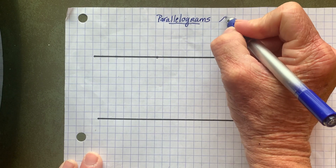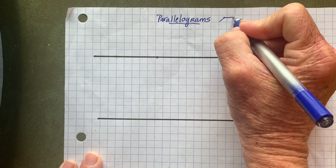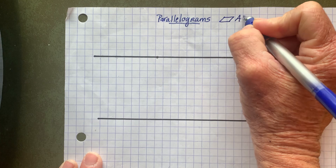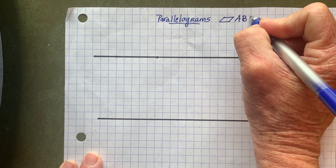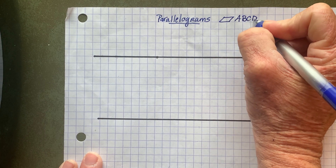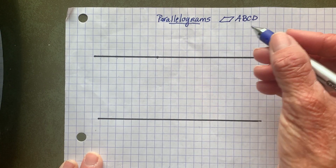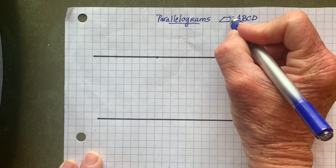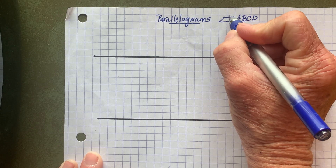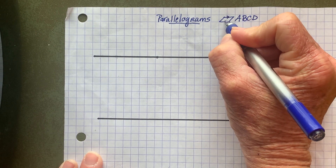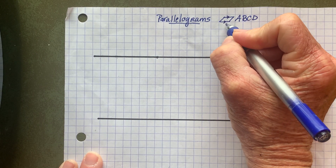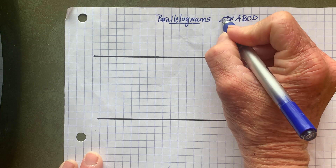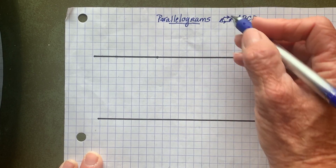The symbol for a parallelogram is this, and I'm going to create parallelogram ABCD. What makes a parallelogram a parallelogram, by definition, is that the opposite sides run parallel to each other. So those are parallel, and these are parallel.